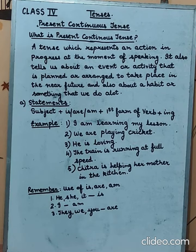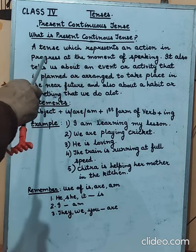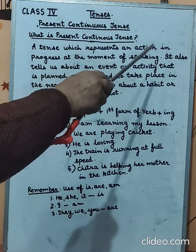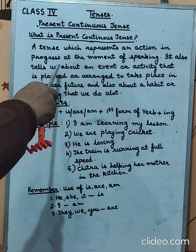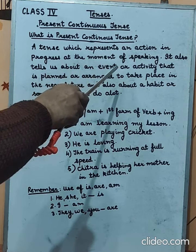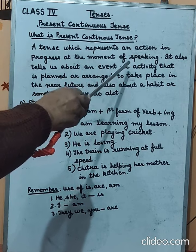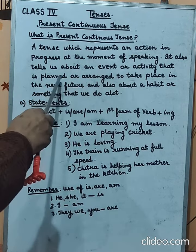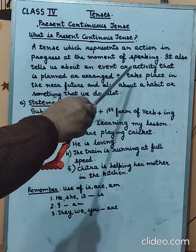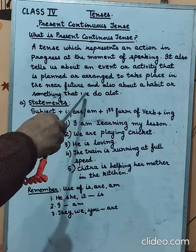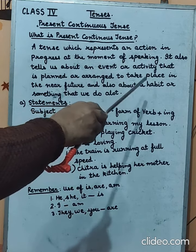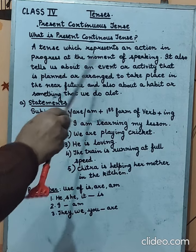Welcome students to the fourth video of tenses. Today we will be learning about the present continuous tense. A present continuous tense is a tense which represents an action in progress at the moment of speaking. It also tells us about an event or activity that is planned or arranged to take place in the near future, and also about a habit or something that we do a lot.